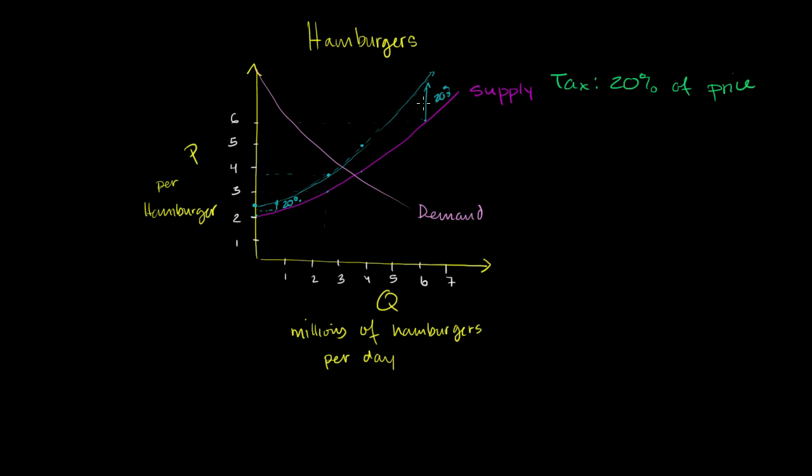But you have the same exact phenomenon that we saw in the previous video. In the previous video, this entire area was the surplus that both the consumers and the producers share. Now the equilibrium quantity is less. It's going to move right over there, because we have this new curve. So our new equilibrium quantity is over here. So neither the consumers, nor the government, nor the producers are going to be able to take advantage of this surplus, which was there when you didn't have the taxation.